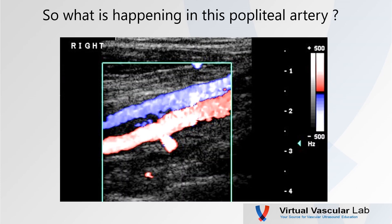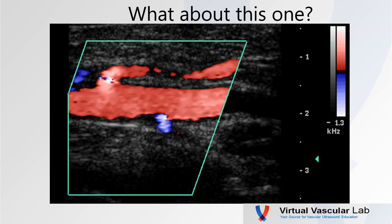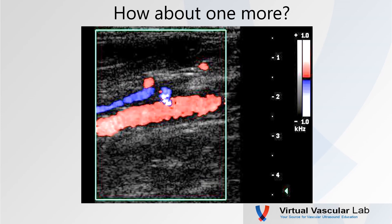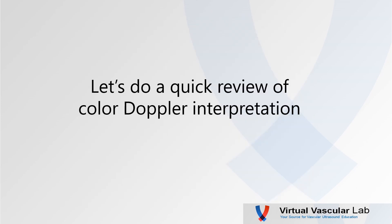Here's a color Doppler image of a popliteal artery. I'll give you a minute to look at that. What do you think? Here's another popliteal artery — what do you think about this one? How about one more? Take a minute and look this one over. Before we go back and revisit these, let's do a quick review of color Doppler interpretation.